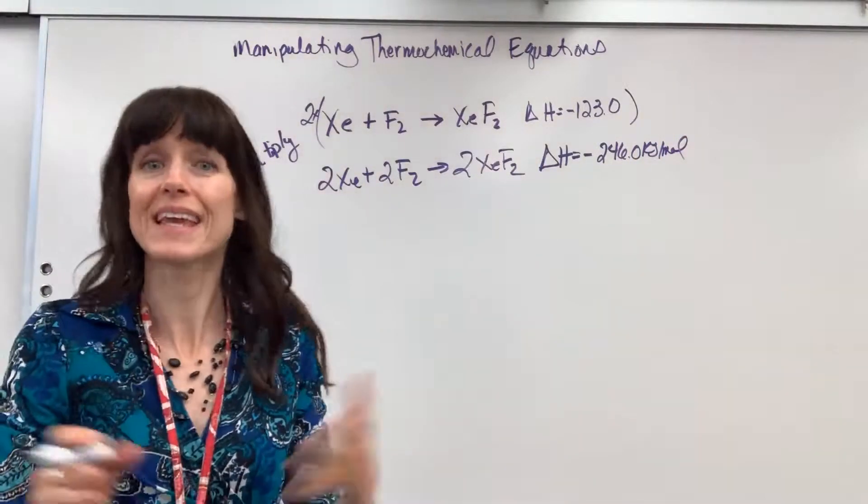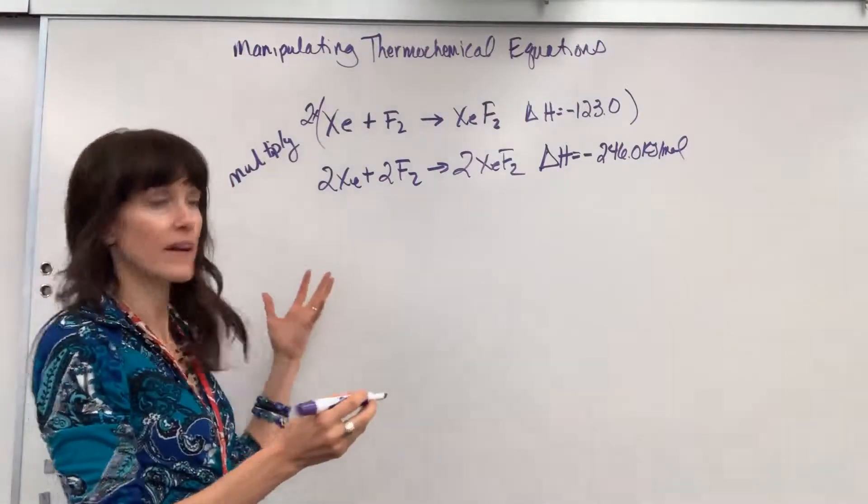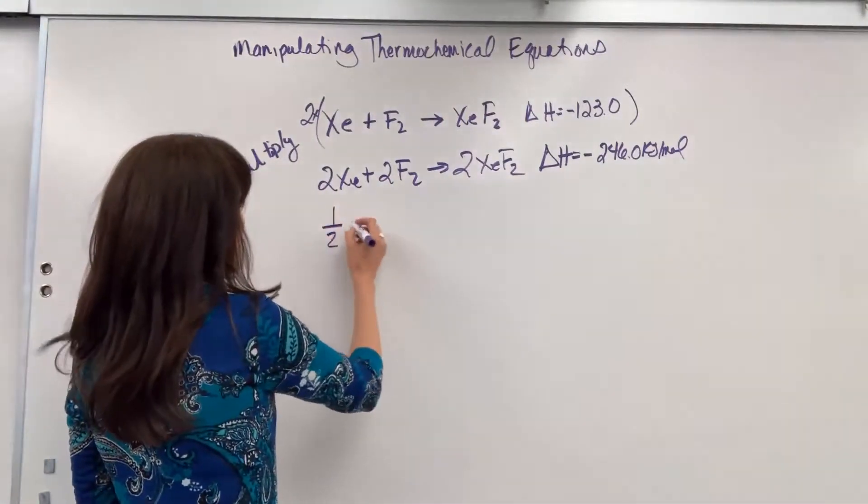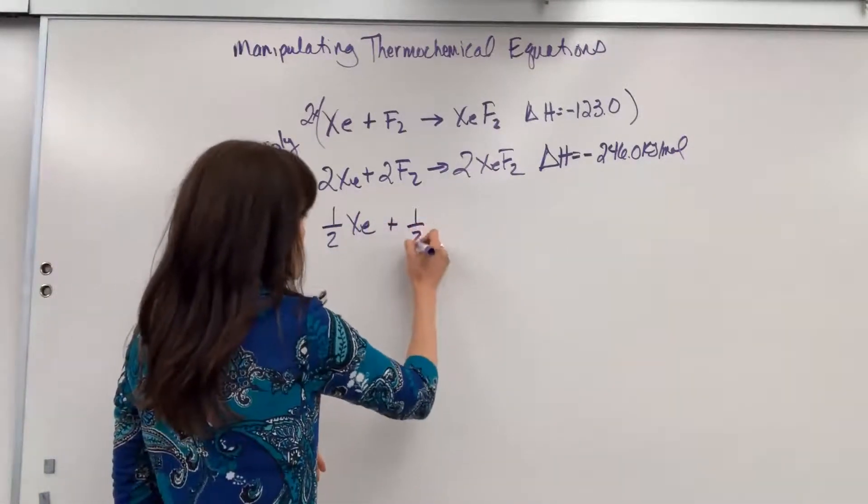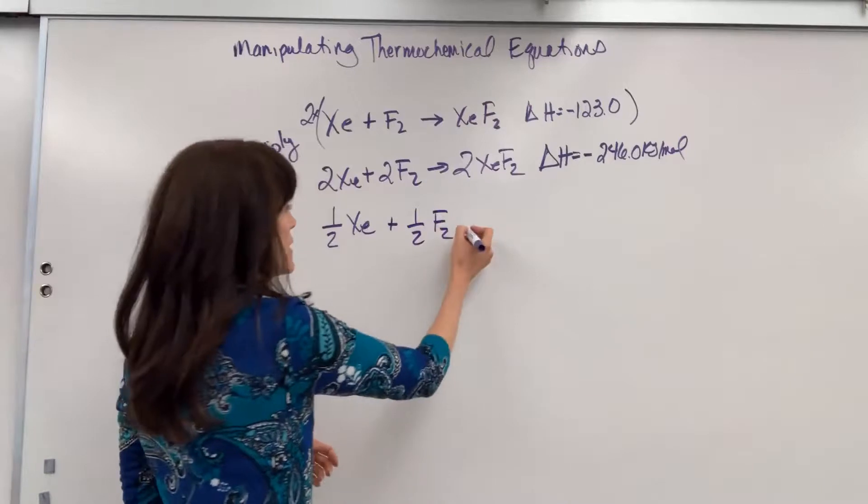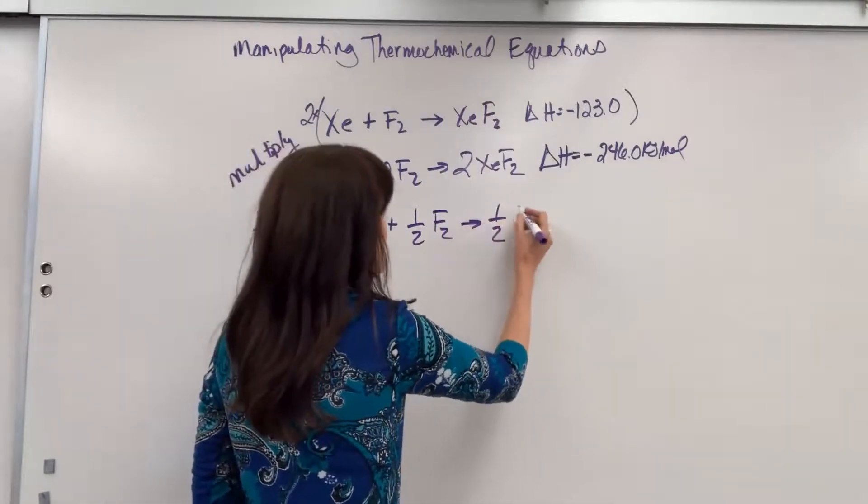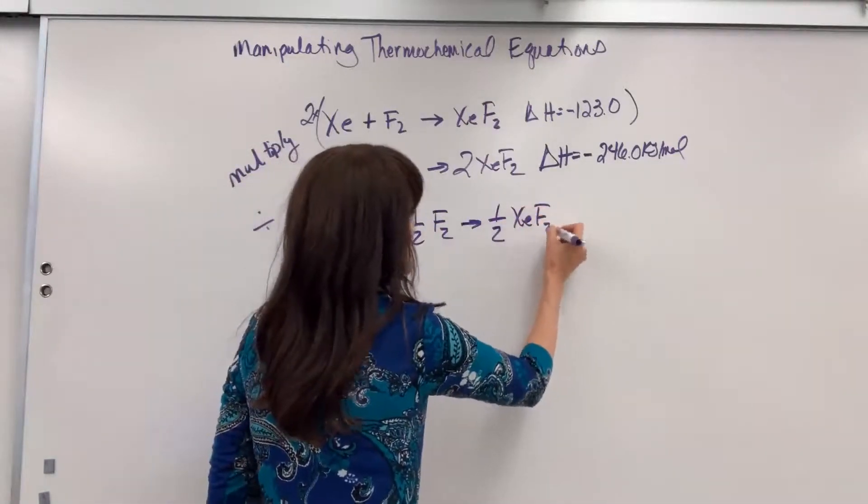Now we could also divide it. Same principle. Let's half it. I only have half a mole of xenon. So if we divide, plus half a mole of fluorine yields half a mole of the xenon difluoride.